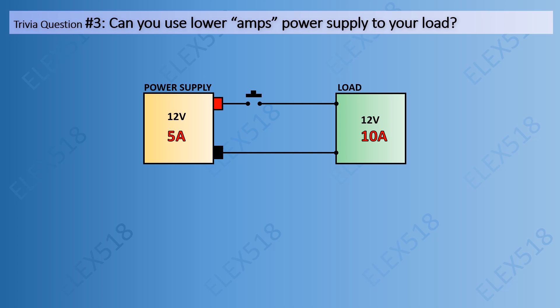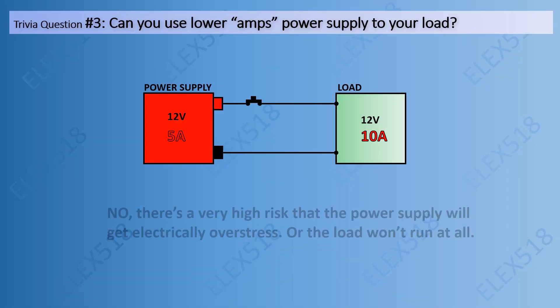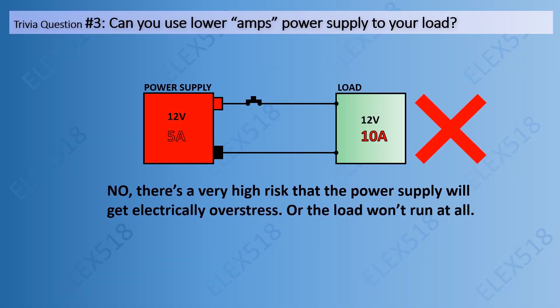Trivia question number three: Can you use a lower amps power supply for your load? For example, you have a 5 amps power supply and your load requires 10 amperes, which is higher than your power supply. No, there is a very high risk that the power supply will get electrically overstressed, or the load won't run at all.